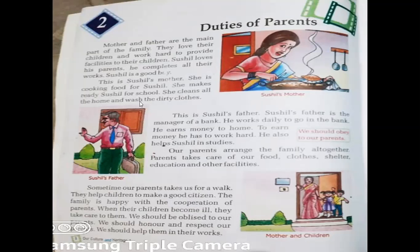She cleans all the home and washes the dirty clothes. So this is Susil's mother — she is working very hard. She cooks food for Susil, makes him ready for school, and cleans all the house and washes the dirty clothes. So this was the first paragraph.